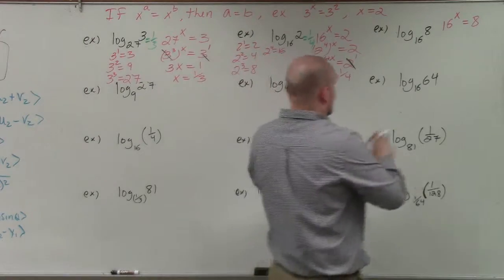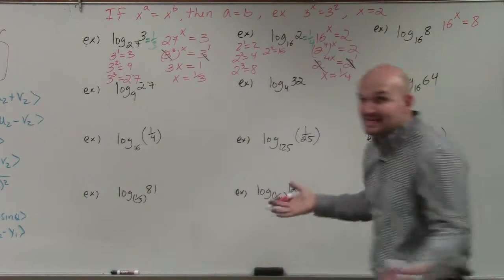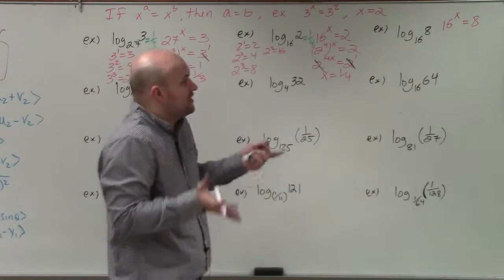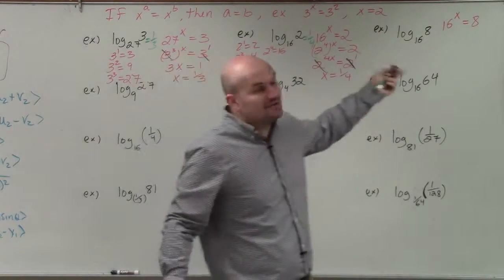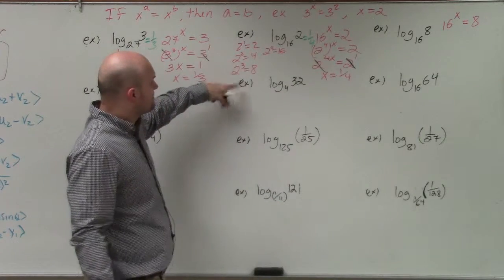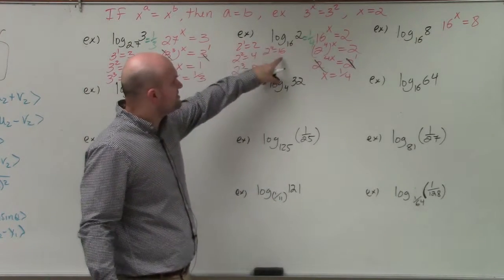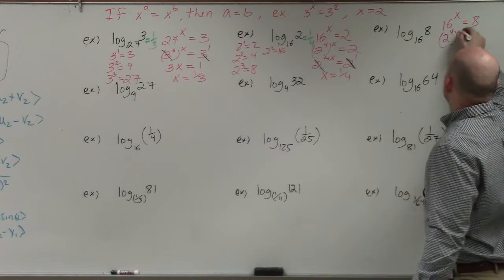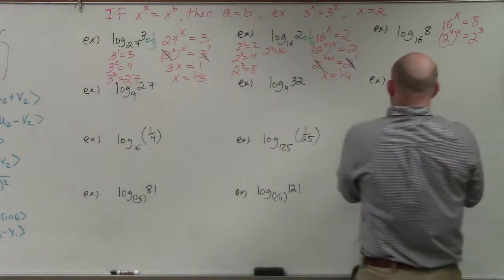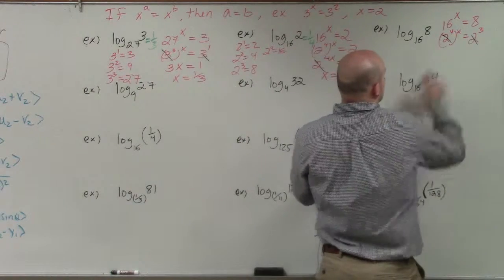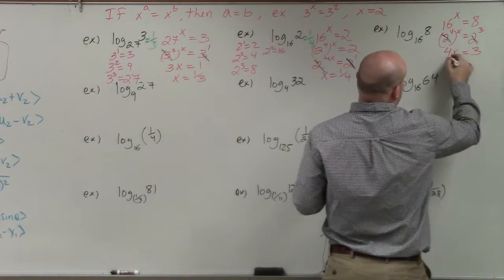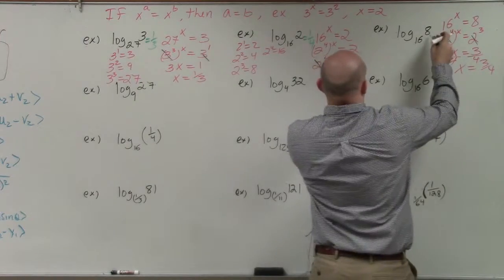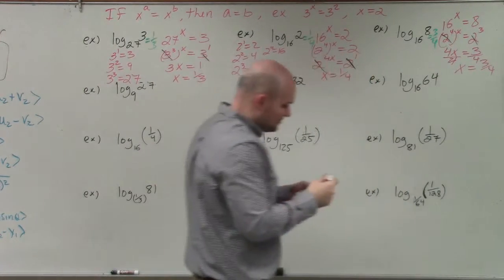For log base 16 of 8, I can't write 16 to a power that gives me 8 directly, so I go back to powers of 2. Since 2 to the fourth is 16 and 2 to the third is 8, I write 2 to the fourth raised to the x equals 2 cubed. Using the one-to-one property, 4x equals 3. Dividing by 4, x equals three-fourths.